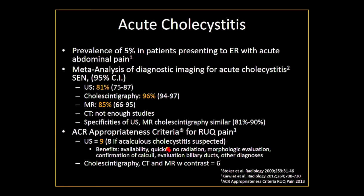Not a lot exists new in the literature — certainly in our literature, I should say — about the diagnosis of acute cholecystitis. If you look at the appropriateness criteria from the ACR, certainly ultrasound is the top imaging modality for this diagnosis. But in fairly large analyses, ultrasound for acute cholecystitis does not come in at 100%, and certainly doesn't come in at 90% — it's actually a little bit lower.